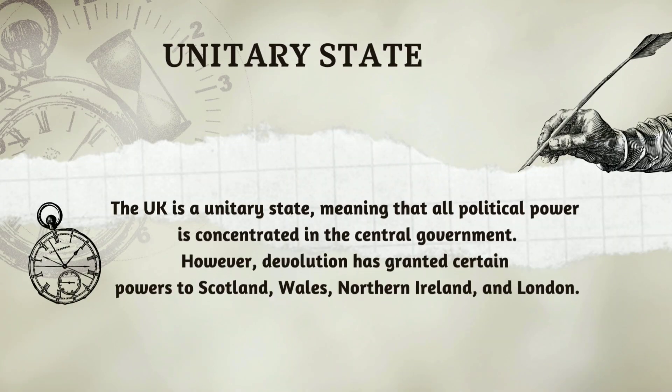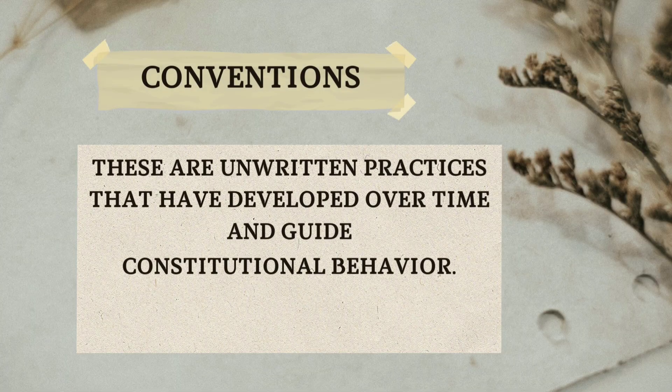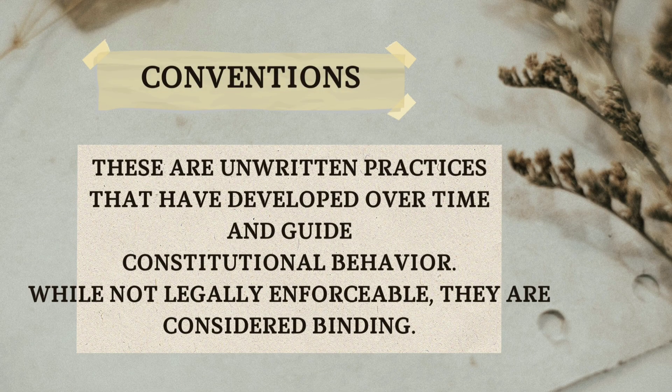Unitary state — the UK is a unitary state, meaning all power is concentrated in the central government. The central and union government handles governance under this unitary state tradition.